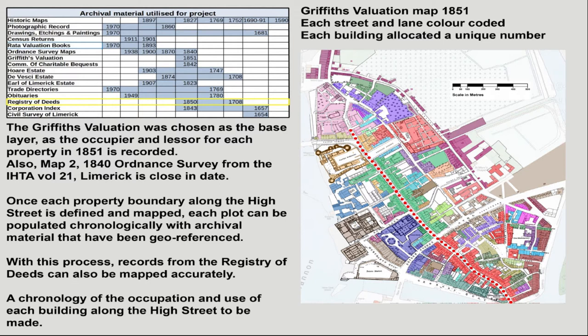I decided to use the Griffiths Valuation because on the Ask About Ireland site there's an online map showing a numbering system for every house on English Town, with the medieval High Street and later Mary Street and Nicholas Street going down the spine, with the herringbone effect of all the medieval burgage plots going either side. On the left is a quick table of just some of the archival material I was trying to map: the base map of the Civil Survey, the rate valuation books, census, Ordnance Survey, all the estate maps. I was able to fix them in the streetscape.